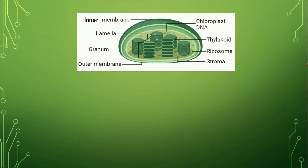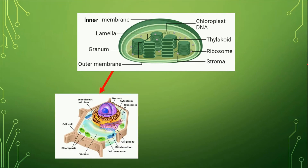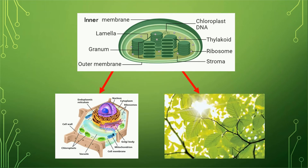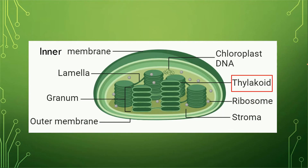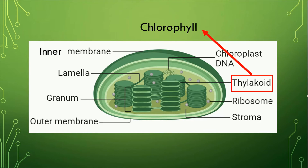Hello nerds, welcome back to Ahmed Coaching. Today we are going to study about the functions of chloroplast. Chloroplast is an organelle which is present in plant cells only — it is totally absent in animal cells. It is specifically present in the green leaves and absent in any other parts of the plant. The thylakoid membrane in the structure of chloroplast is very important because it contains chlorophyll, a pigment present specifically in the chloroplast, which is very important for chloroplast to perform its functions.